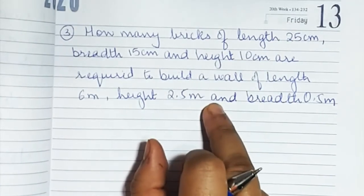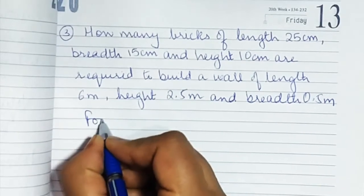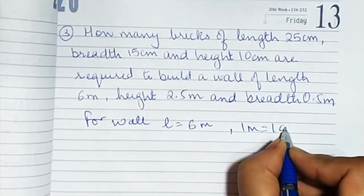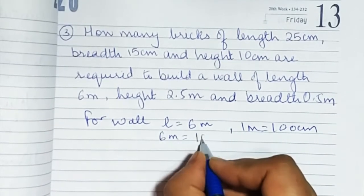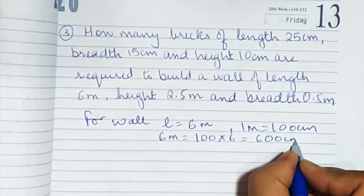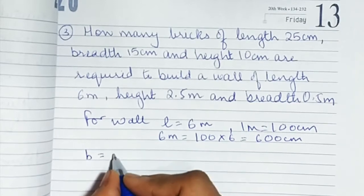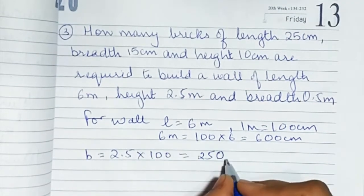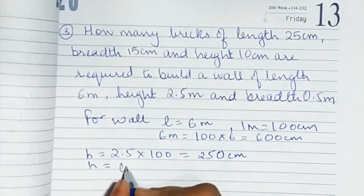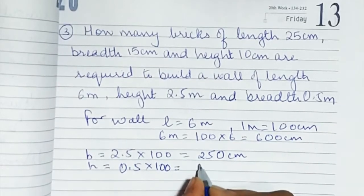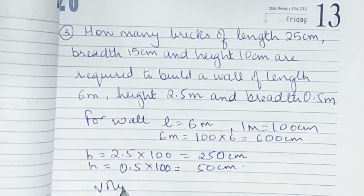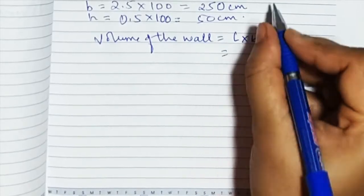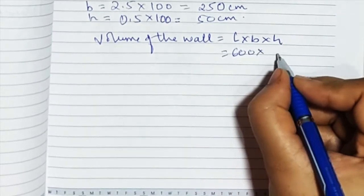For the brick we have centimeters, but for the wall we have meters, so we need to convert. 1 meter = 100 centimeters, so: wall length = 6 m = 600 cm; breadth = 2.5 m = 250 cm; height = 0.5 m = 50 cm. Now the volume of the wall = length × breadth × height = 600 × 250 × 50.